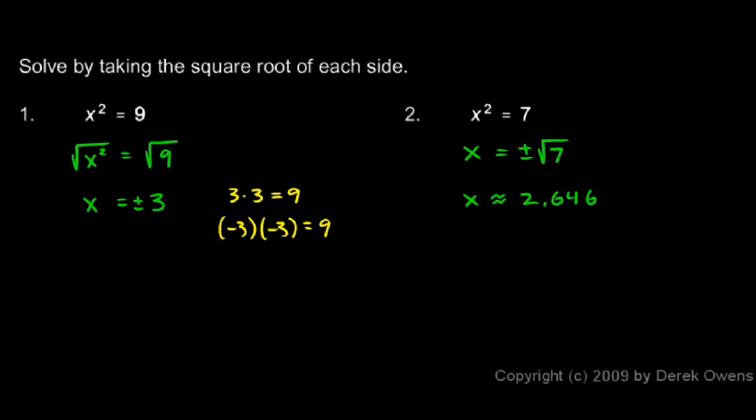But typically in math class, if you're asked to give the number as a decimal number, and you might be asked to give it as a decimal number rounded to a certain number of places, then you would write it like this. Otherwise, though, you would give this answer, plus or minus the square root of 7. And you would write it like that, in radical form, simply because that is the exact answer.